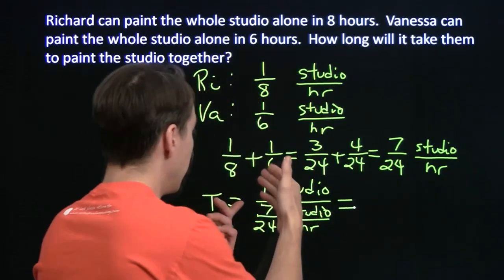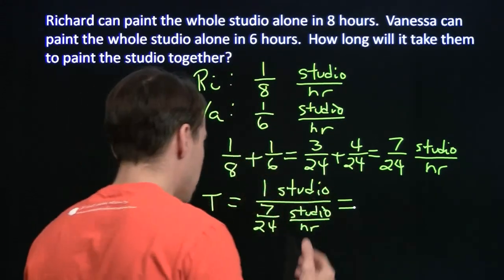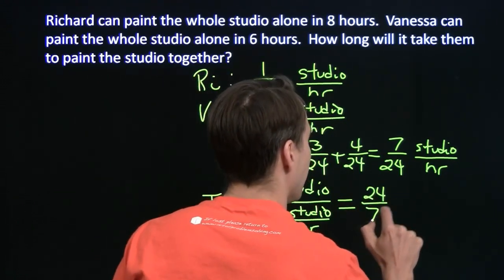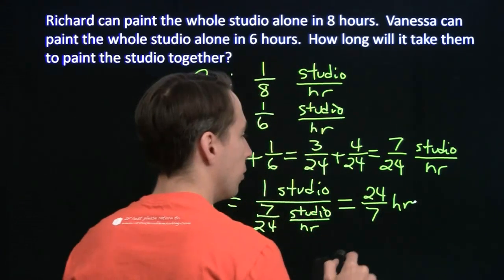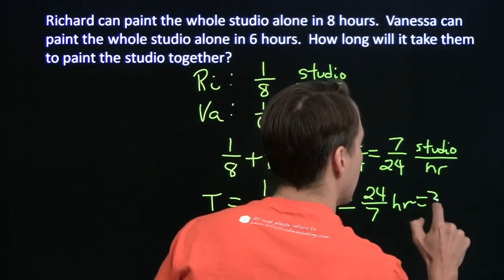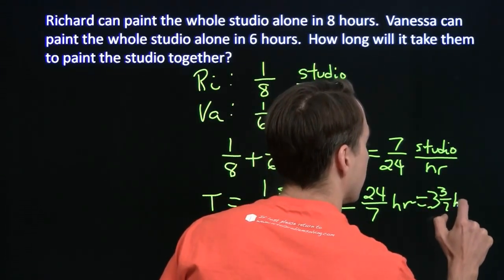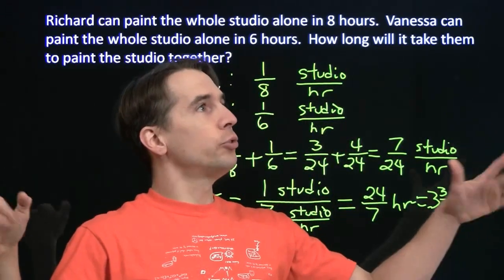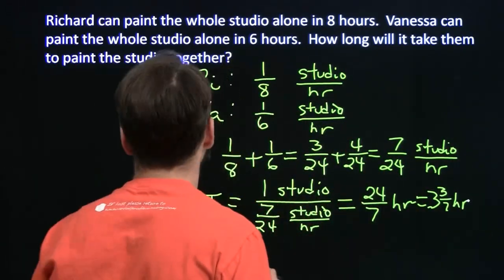Of course, you divide something into one. That's just taking the reciprocal. So this is 24 over seven hours. Twenty-four over seven. Of course, that's three and three-sevenths hours. It takes us almost three and a half hours to paint this whole studio this awesome color of orange.